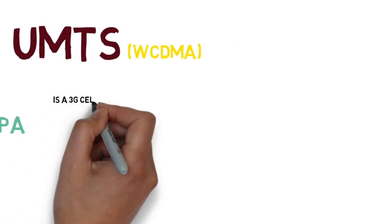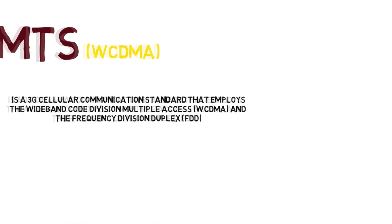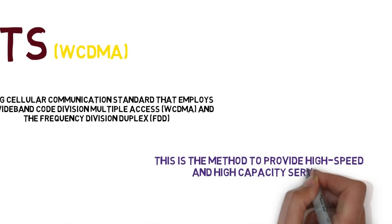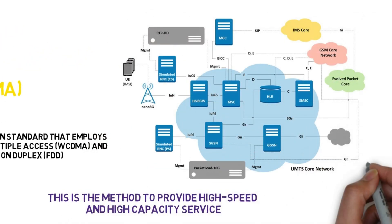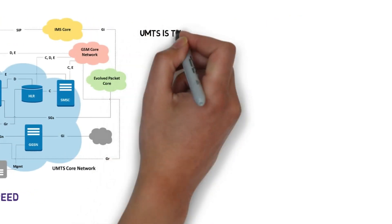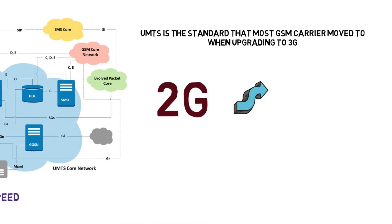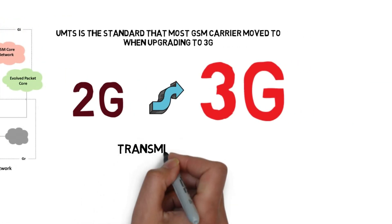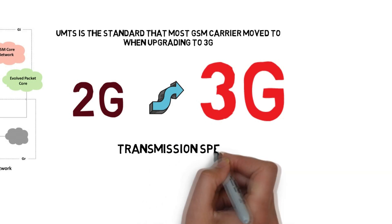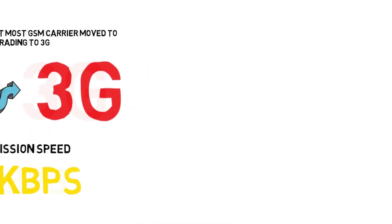WCDMA is a 3G cellular communication standard that employs wide-code division multiple access. This method provides high speed and high capacity of service. UMTS is the standard that most GSM carriers moved to when upgrading to 3G, with a transmission speed of 384 KB per second.